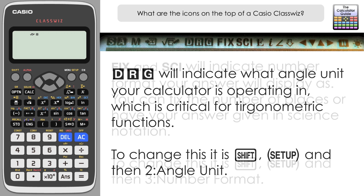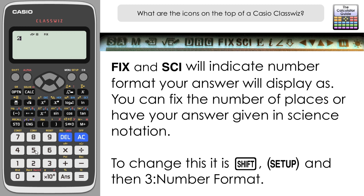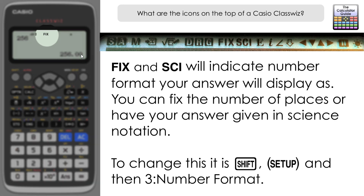Next to the DRG we have Fix and Sci, related to the number format in terms of how your answers are displayed on the ClassWiz. In the setup menu — Shift, Setup, and 3 for number format — Fix is option 1 and fixes the number of decimal places displayed. You can select from 0 to 9. Selecting 2 decimal places and inputting 256, press equals — you can see it's displayed as 256.00 and Fix is now highlighted.